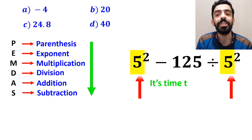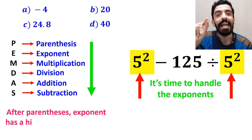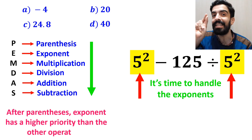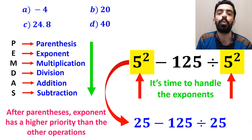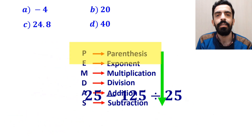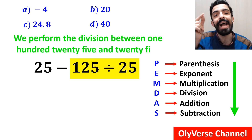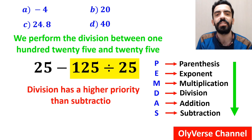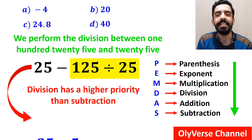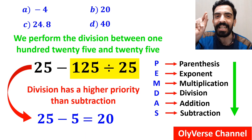Next, it's time to handle the exponents. According to the PEMDAS rule, after parenthesis, exponents have a higher priority than the other operations. So we rewrite this expression as 25 minus 125 divided by 25. In the final step, we perform the division between 125 and 25, because division has a higher priority than subtraction. This expression simplifies to 25 minus 5, which finally gives us the answer 20.